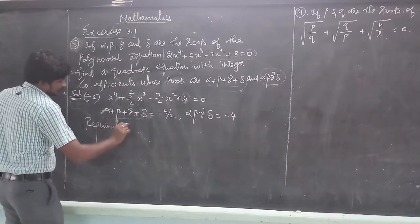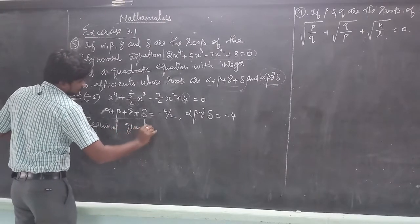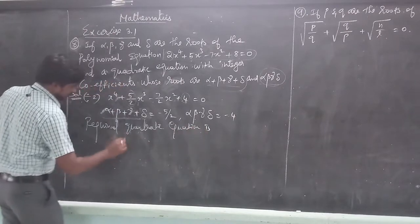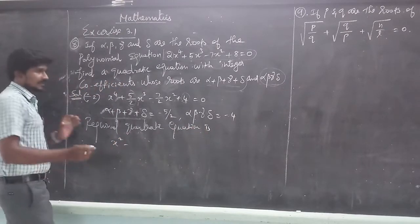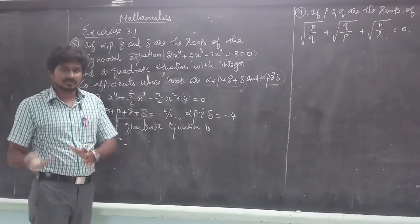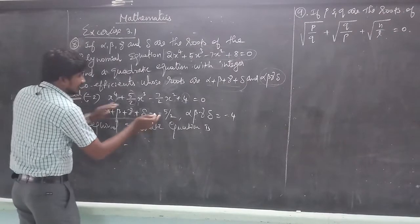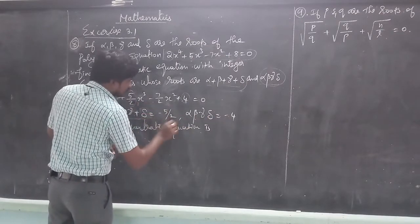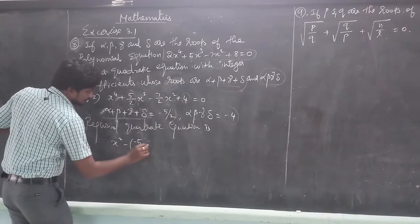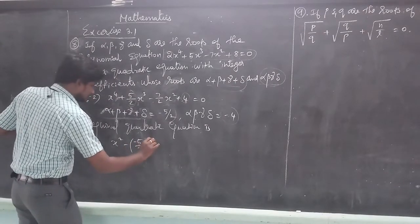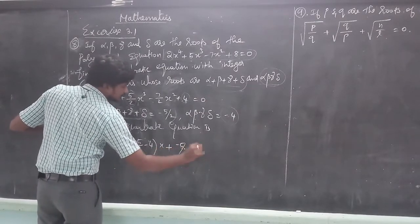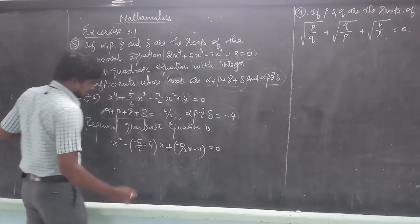So the required quadratic equation is of the form x² - (alpha + beta)x + (alpha × beta) = 0. The sum of the roots is -5/2 + (-4), and the product is (-5/2) × (-4), which equals 0. We substitute: x² minus (-5/2 - 4)x plus (-5/2 × -4).